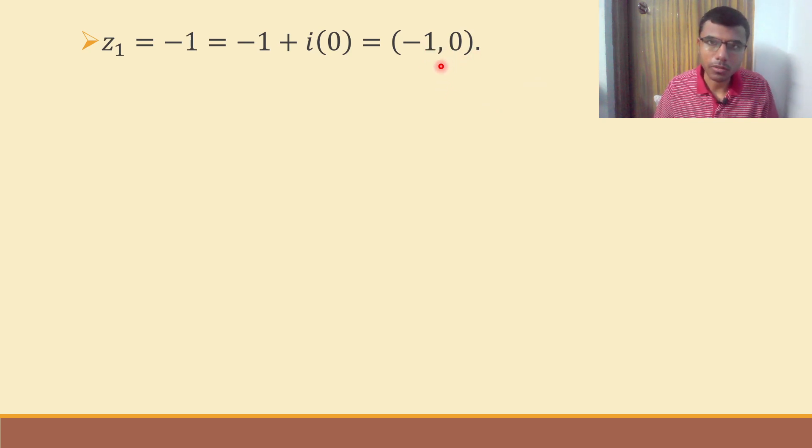Now you might think what will we get by doing this. We can find out argument by doing this. This is my positive x, positive y. Minus 1 comma 0 is somewhere here. Now connect origin and this point.